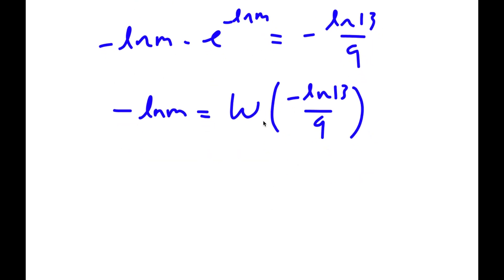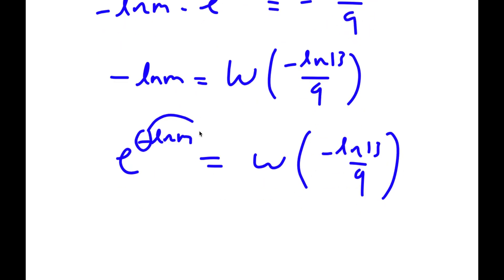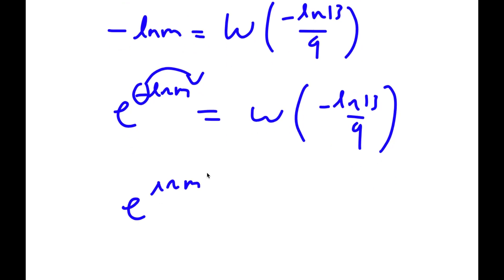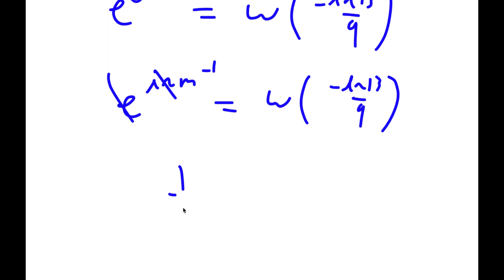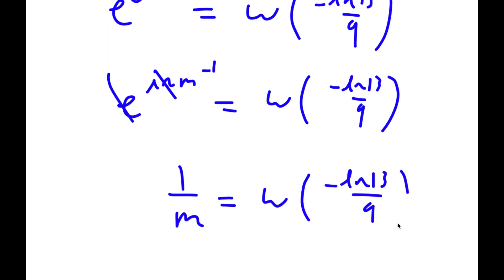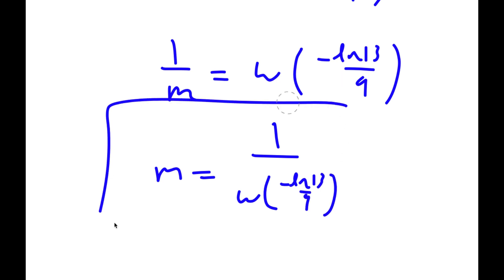Now I'm going to take e to the power of both sides: e to the power of negative ln m equals e to the power of W of negative ln 13 over 9. Moving the negative to the front gives e to the power of ln m to the power of negative one, which equals W of negative ln 13 over 9. Since e and ln cancel, I get one over m equals W of negative ln 13 over 9, meaning m equals one over W of negative ln 13 over 9. So this is my answer.